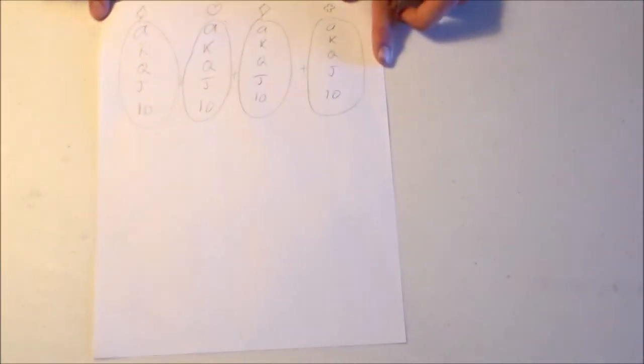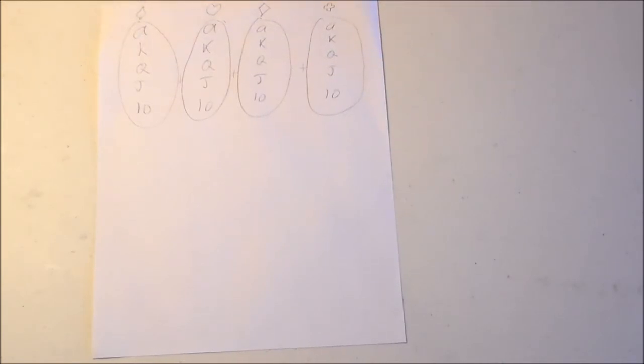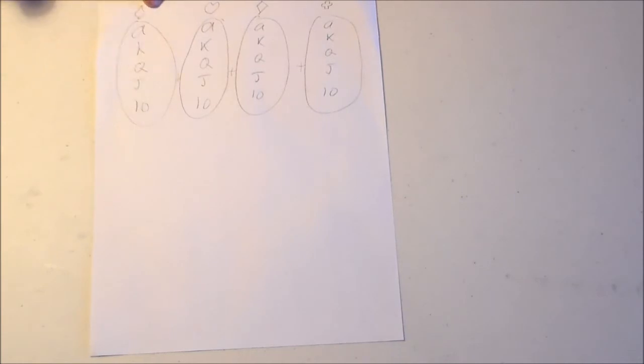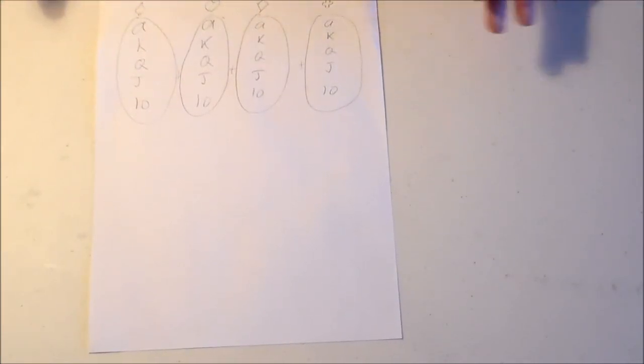All right, so now we're going to talk about what happened in that trick. So remember we had the piles, the spades, the hearts, the diamonds, and the clubs. And we had the cards ace, king, queen, jack, ten in each. So I'm going to see these as sets. So this is the set of spades, the set of hearts, the set of diamonds, and the set of clubs. And each set contains the elements ace, king, queen, jack, ten, or the cards. And notice that they're distinct objects. They're different from each other, okay? So that's what an element is. It's a distinct object. And sets are a collection of distinct objects or elements.